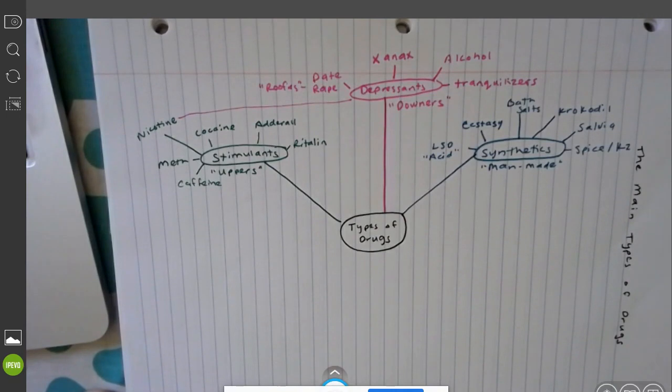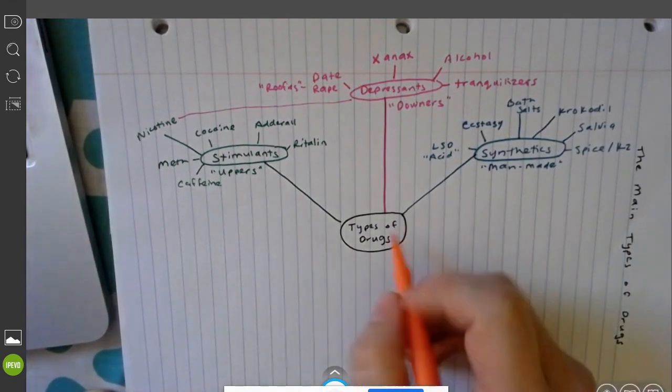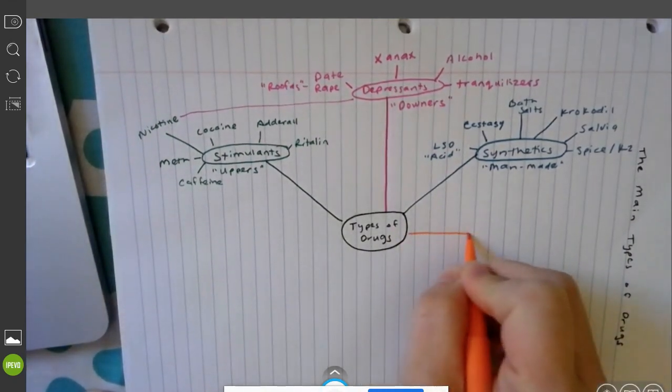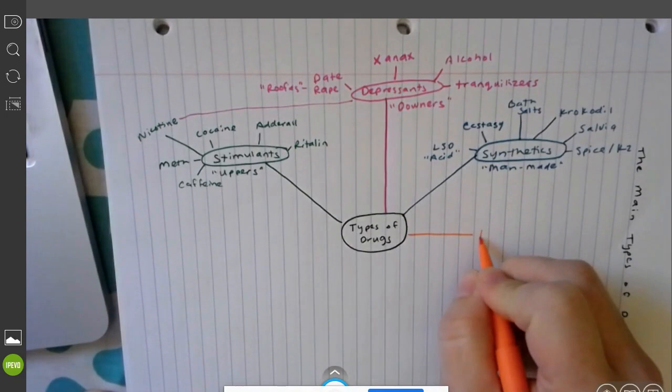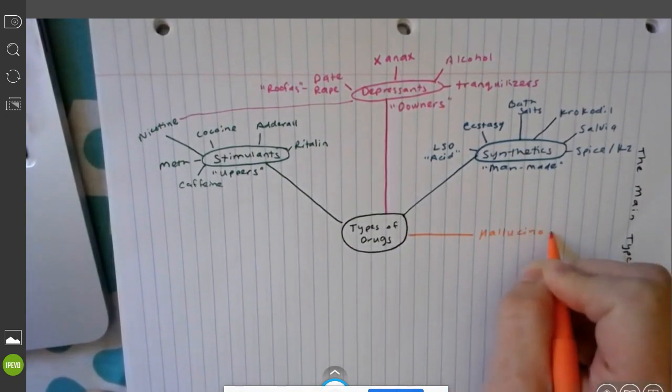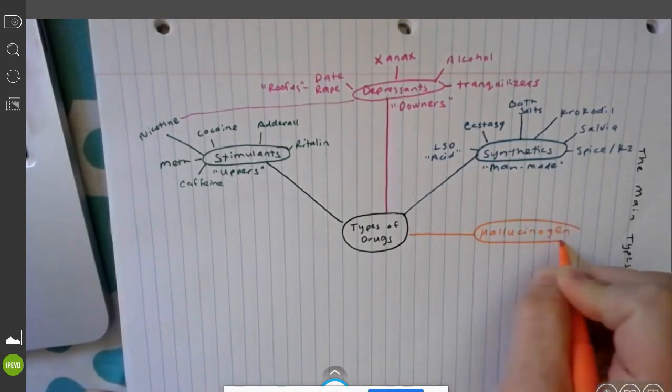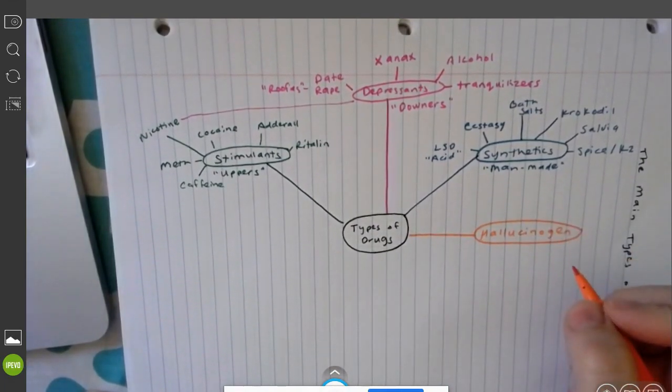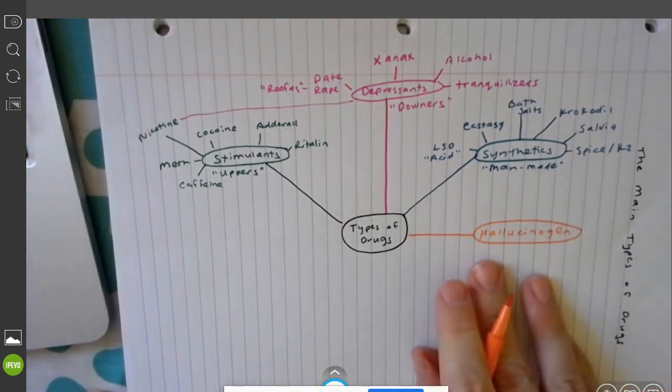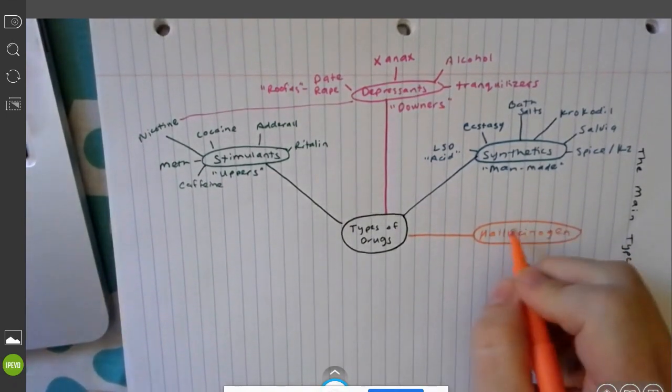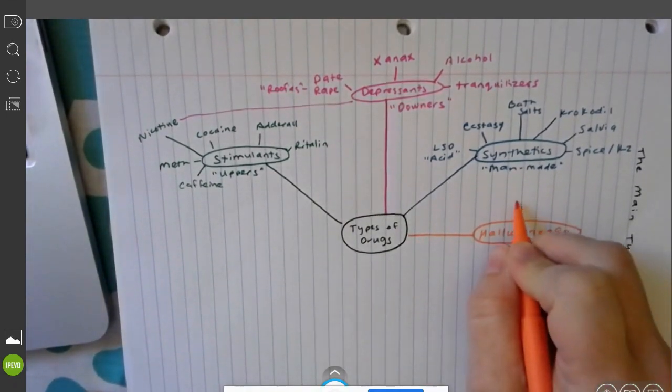The next category is going to be your hallucinogens. These are going to cause your senses to get crossed. These are going to be things that cause you to like hear colors and taste sounds, they're going to cause you to hallucinate.